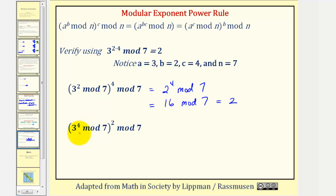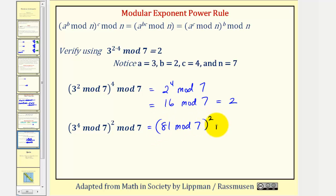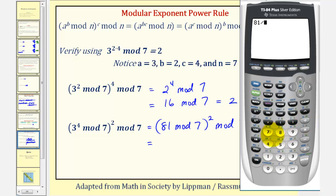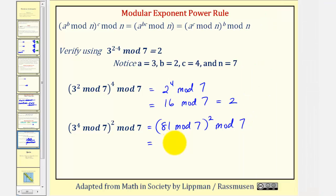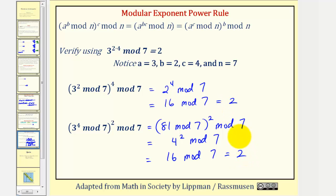Next, checking the other form: three to the fourth is 81, so this is 81 mod seven, raised to the second mod seven. Dividing 81 by seven, subtracting 11, times seven gives four. So we have four squared mod seven, which is 16 mod seven, which we know equals two. This verifies the modular exponent power rule.